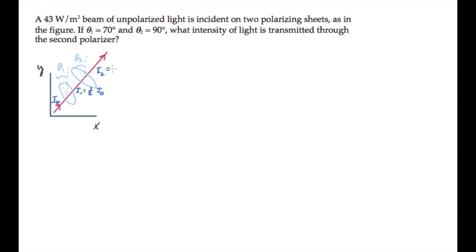The intensity that passes through that one will be I1, the incoming intensity, times cosine squared of the angle between the polarized axis and the axis of the new polarizer. That's theta2 minus theta1, or 20 degrees.